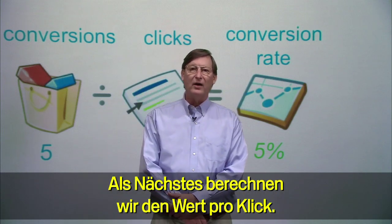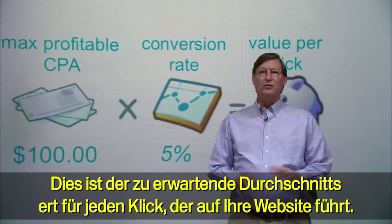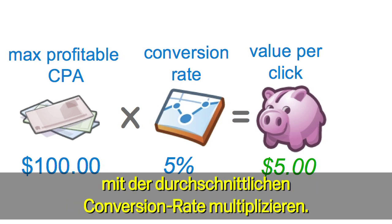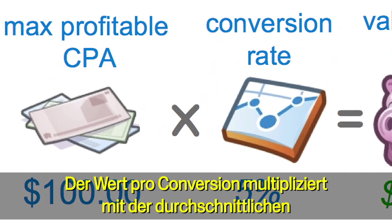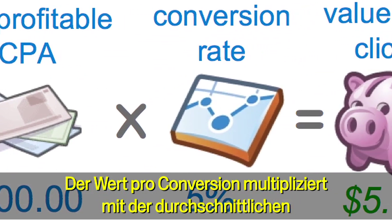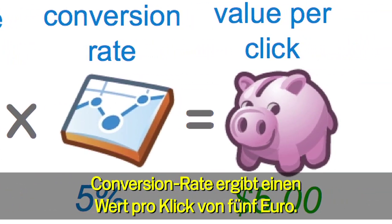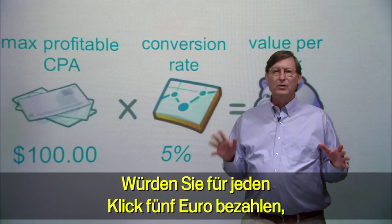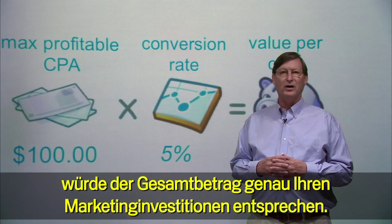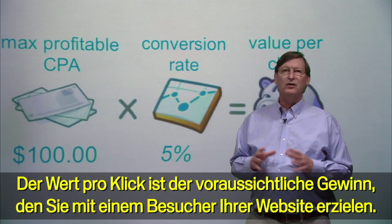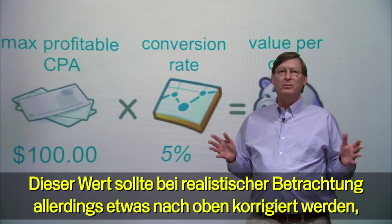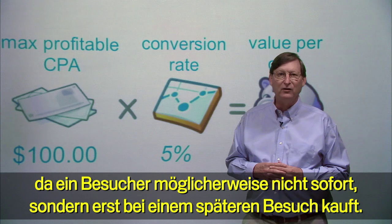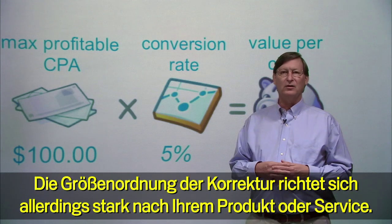The next step is to calculate your value per click. This is the value that you can expect on average for each click to your website. You can calculate your value per click by multiplying your value per conversion times your average conversion rate. So your value per conversion times your average conversion rate gives you a $5 value per click. This means that on average, each click to your website has an expected value of $5. If you were to pay $5 for each click, you'd expect to just break even on your marketing investment. The value per click is the expected profit from a current visitor to your website, but you might want to bump this value up a bit to reflect the fact that a visitor might not convert on this particular visit but may return in the future to buy something.